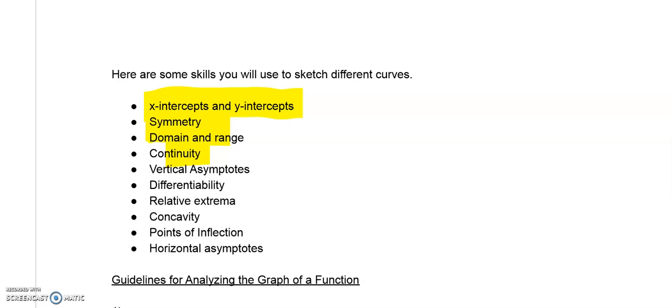If there's any vertical or horizontal asymptotes, we need to look at those as well. Differentiability, relative extrema, looking at maxes and mins. Concavity, points of inflection, and horizontal asymptotes. I don't tend to use those all that much, but they can be helpful depending on what type of graph you're looking at.